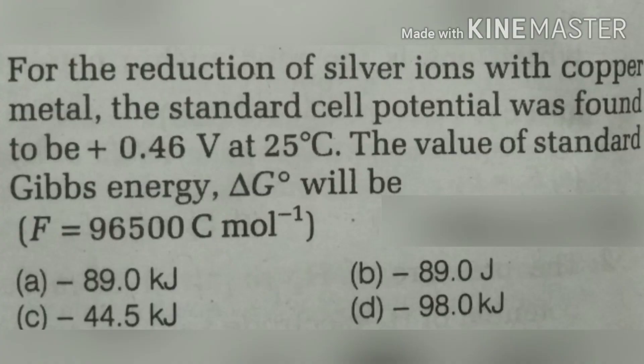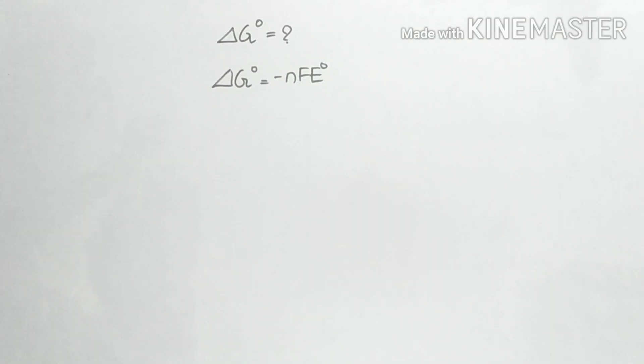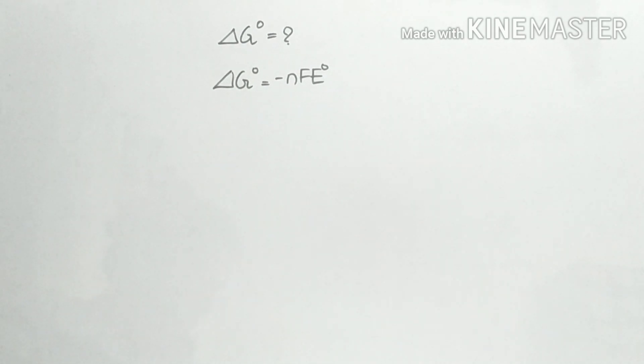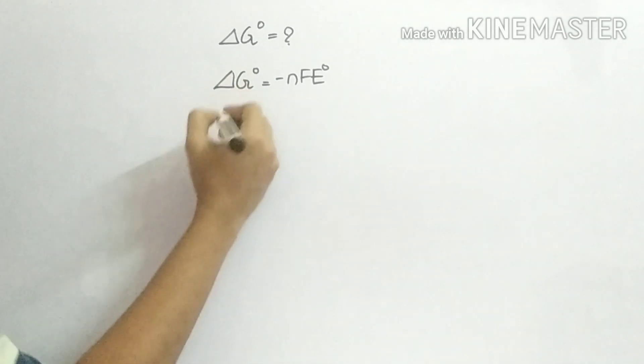Next question: for the reduction of silver ions with copper metal, the cell potential was found to be 0.46 volt at 25 degrees Celsius. The value of standard Gibbs free energy delta G0 will be. The standard delta G0 equals minus nFE0. The standard cell potential E0 cell is plus 0.46 volt.